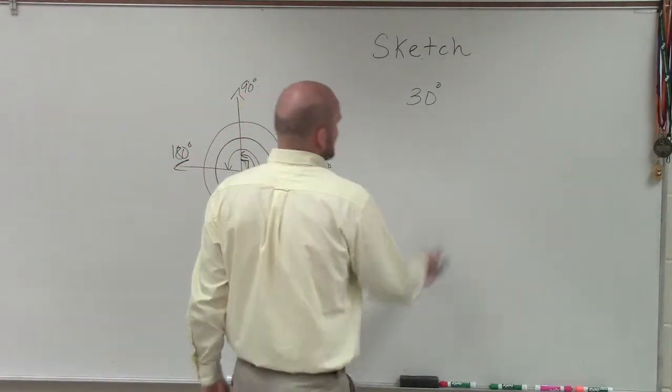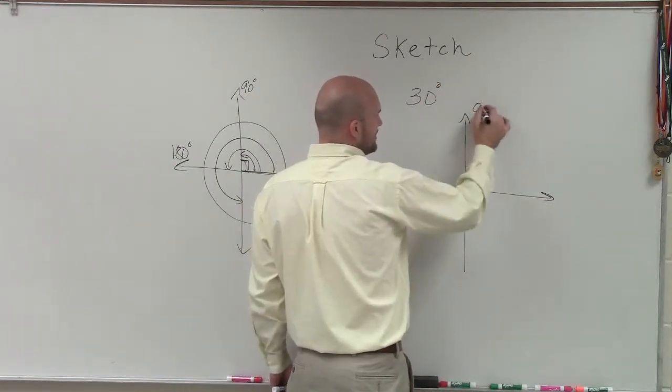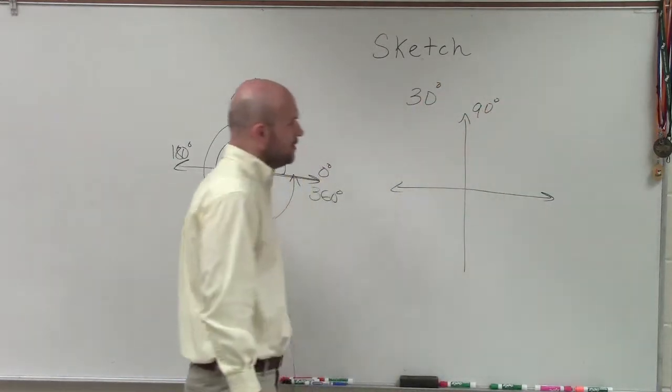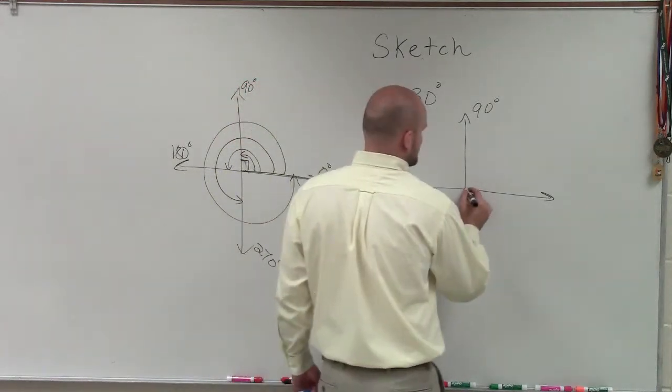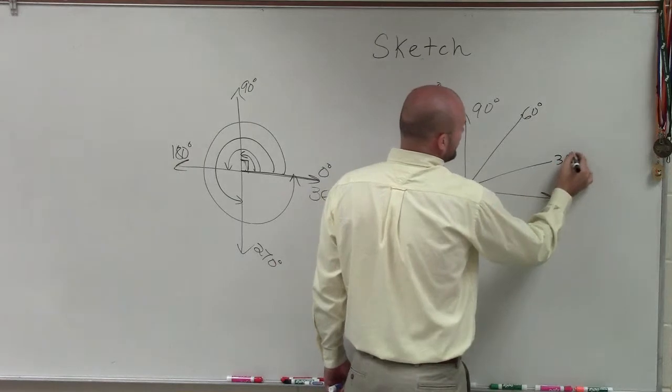So I need to sketch 30 degrees. All right? So sketching 30 degrees, well, obviously, we know that's an acute angle, right? If that's 90 degrees, well, let's break that up into thirds. So if that's 90, that would be 60, and that would be 30 degrees.